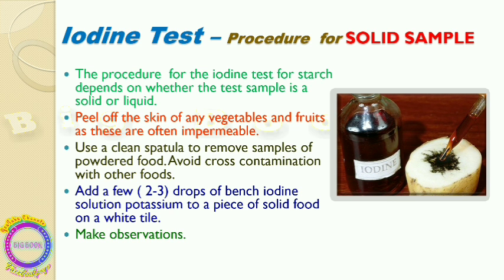As shown in the image, iodine solution has been directly added onto a half-cut potato to show the result. Alternatively, you can take a spatula, collect some sample, place it on a watch glass or white tile, pour the iodine solution over it, and observe whether the color is changing or not.